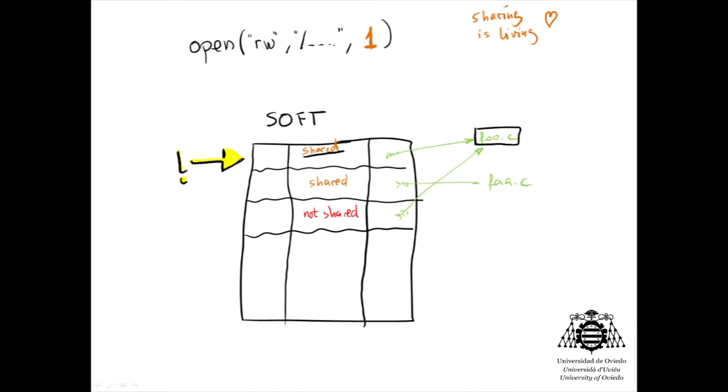Of course, if the sharing mode was zero, we would directly create a new entry - no check needed. This is not enough to share the entry in the table. The opening mode - reading, writing, or both - must be as well the same.